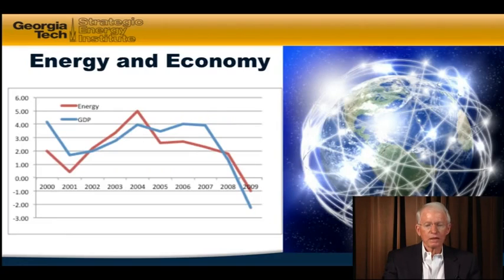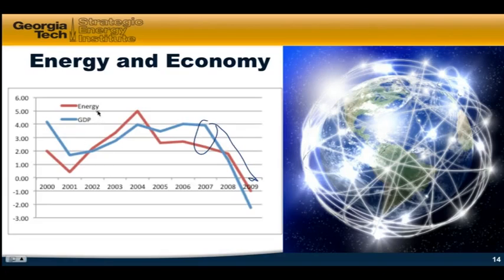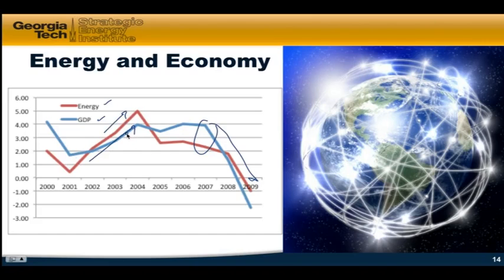Another major point is we cannot have economic growth of any significance without an energy increase. And the best way to decrease energy consumption and CO2 emissions is to have an economic recession — that's exactly what happened. When the economy is growing, our energy consumption is growing. We can ameliorate that somewhat, but we're a little stumped as to how we can ever fully decouple that relationship.